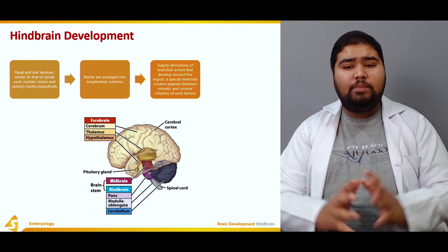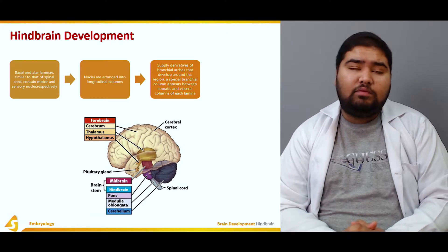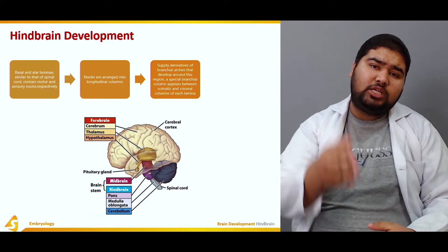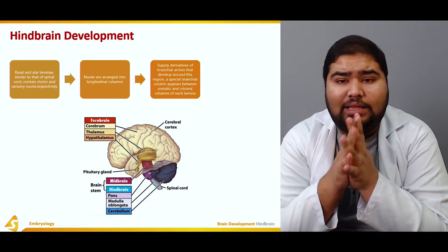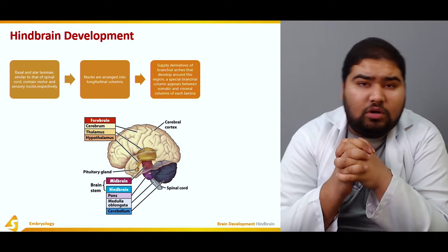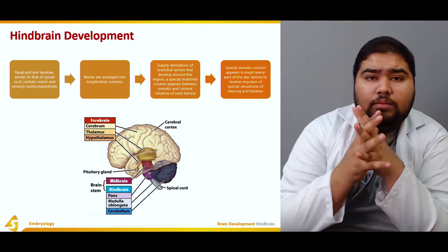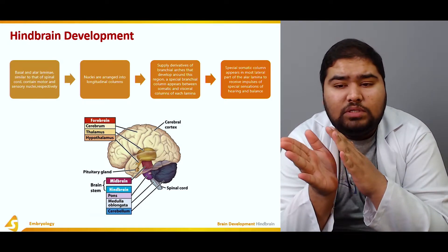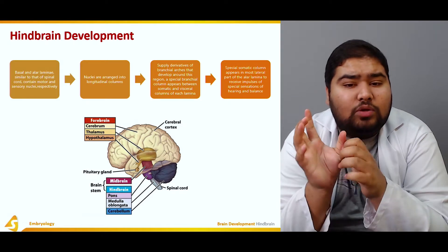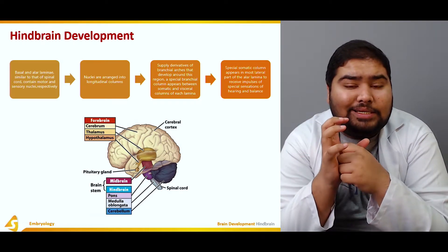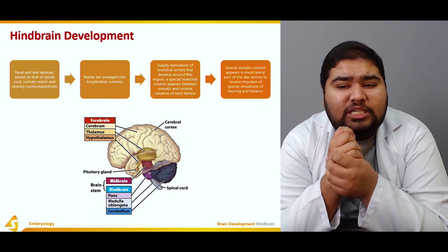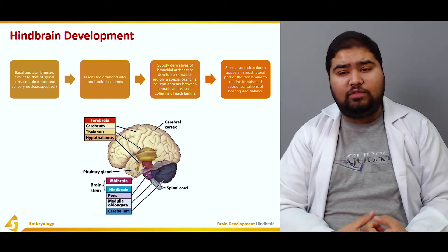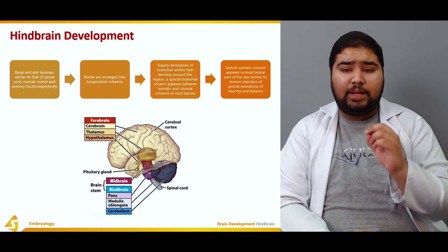A special branch comes to lie between the somatic and the visceral columns of each lamina. A special somatic column appears in the most lateral part of the alar lamina, and it receives impulses of special sensations — that is, hearing and balance.